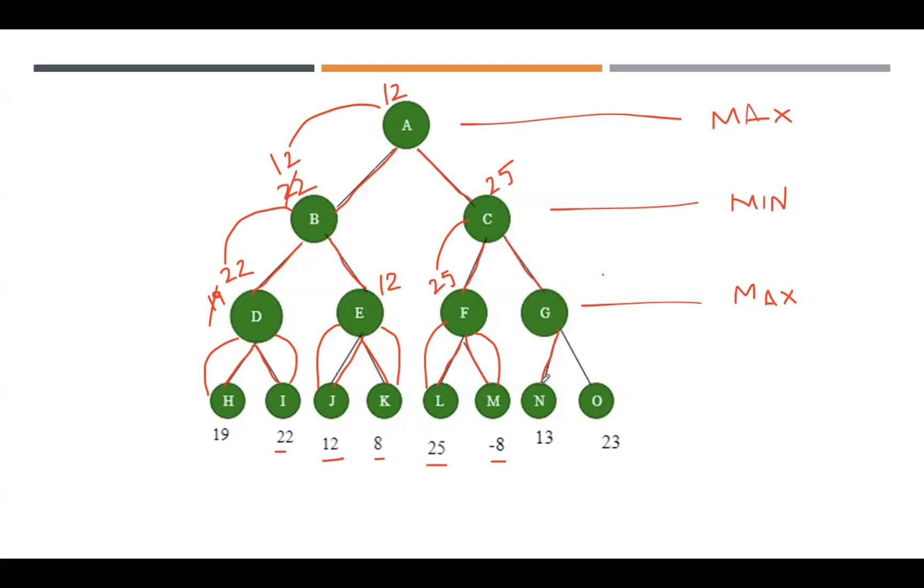Start with the left part of G, which is 13. 13 is sent back to G. Traverse towards the right side—we have 23. 23 is sent back to G. Among 13 and 23, the maximum value is 23, so remove 13 and place 23.